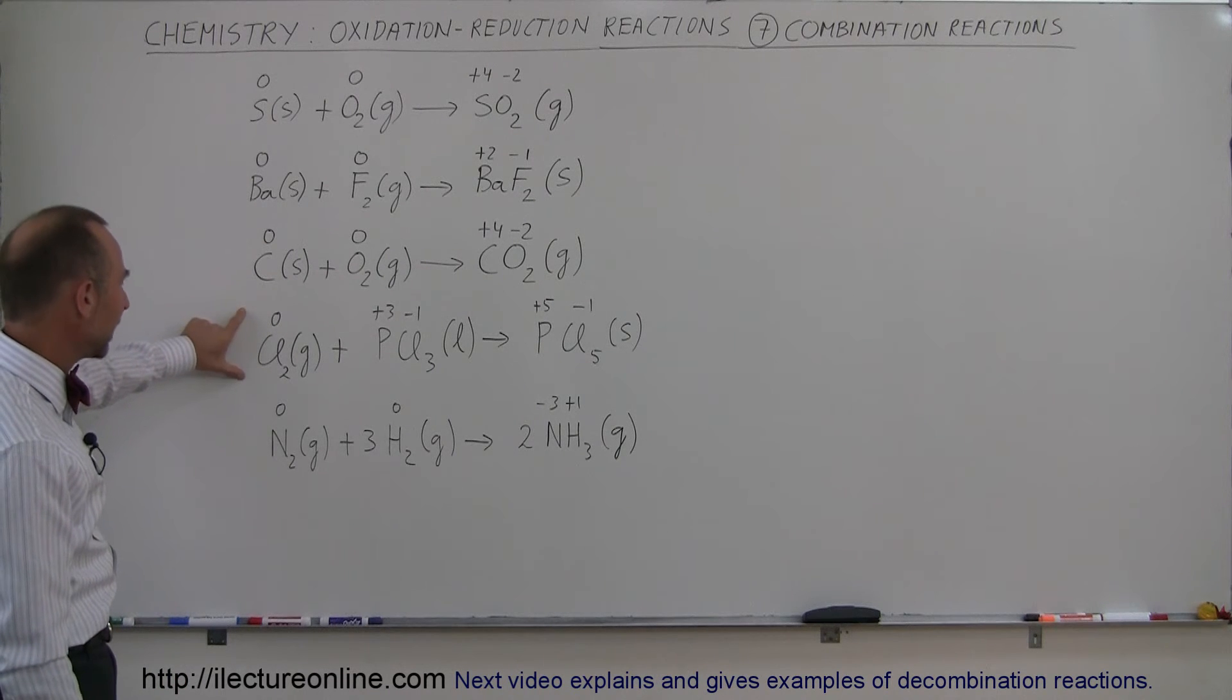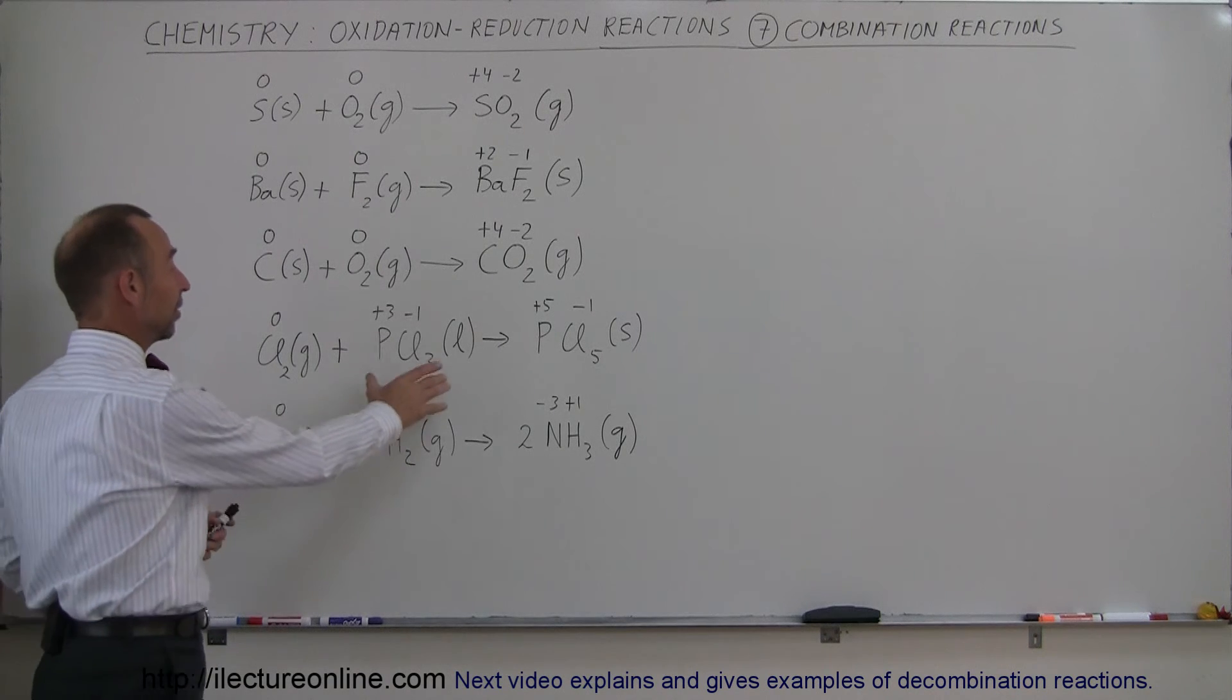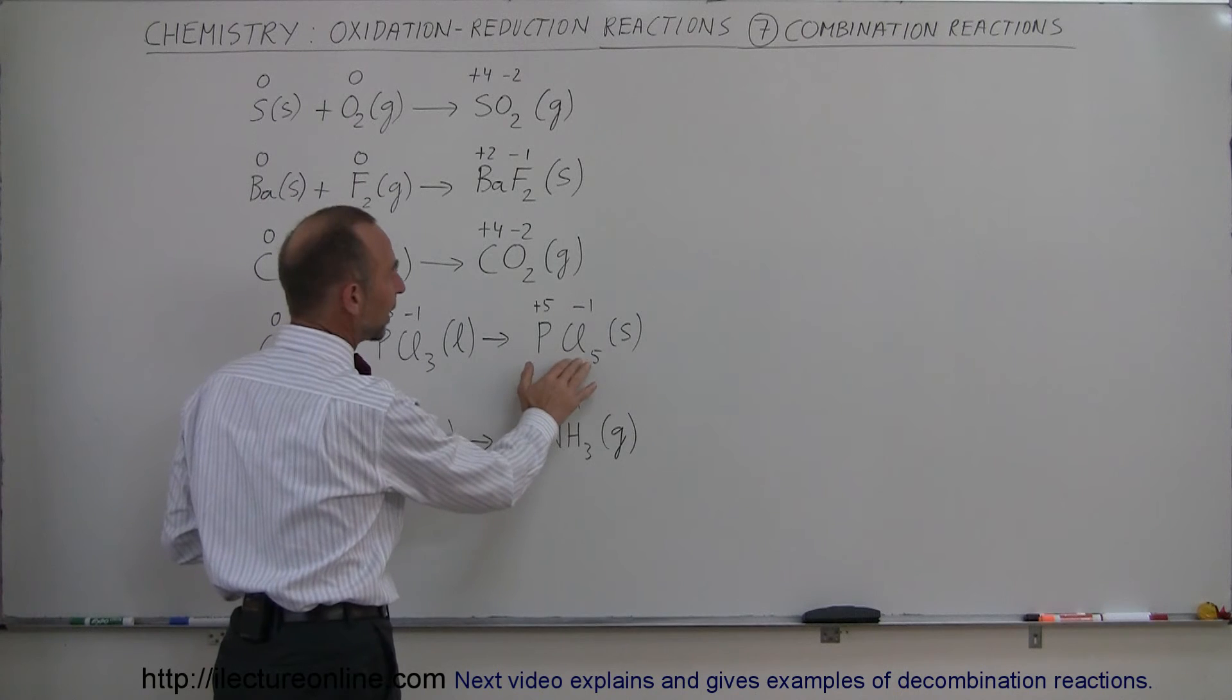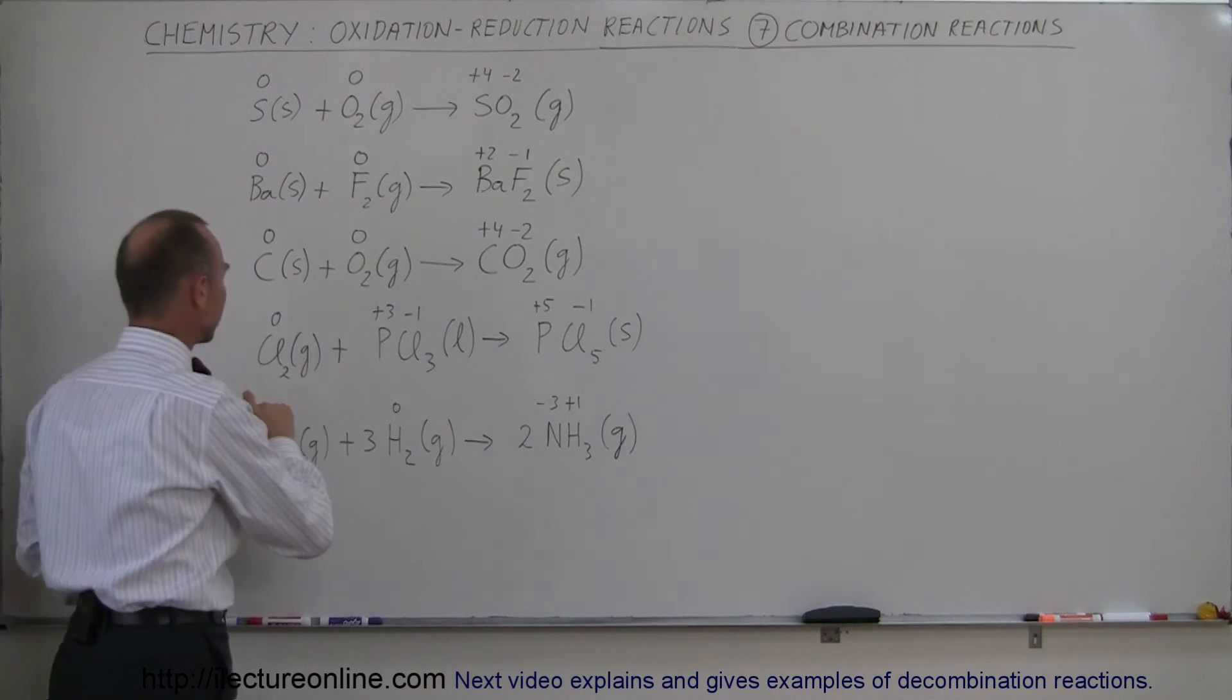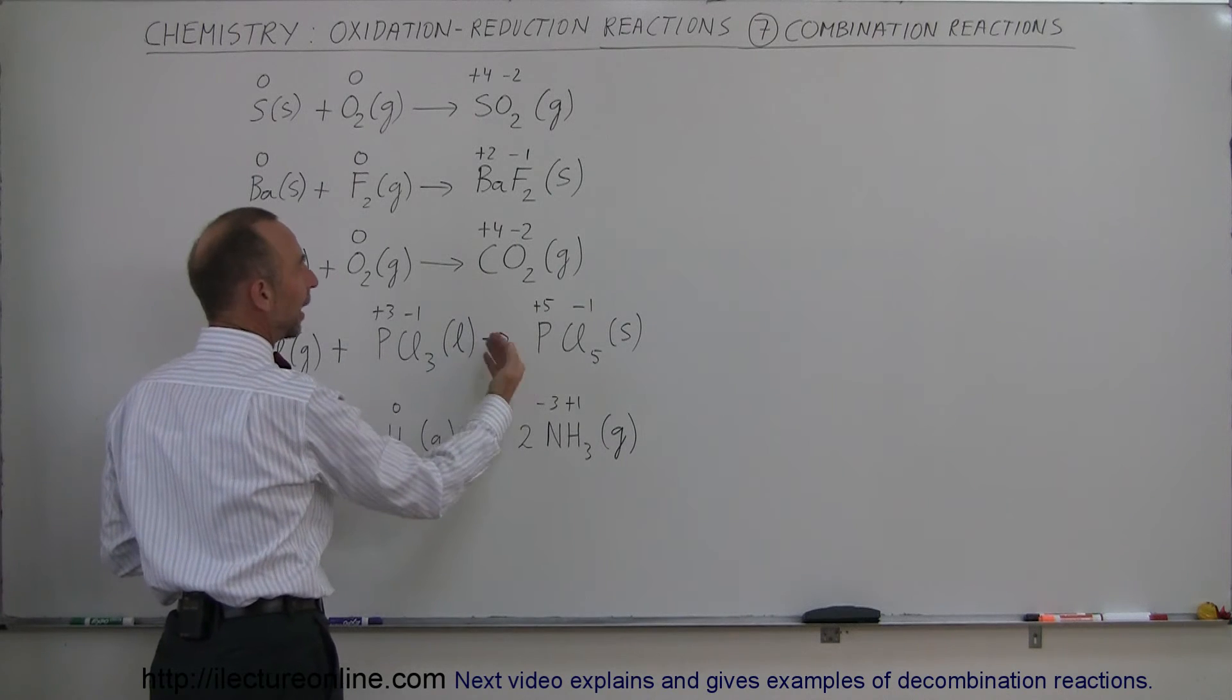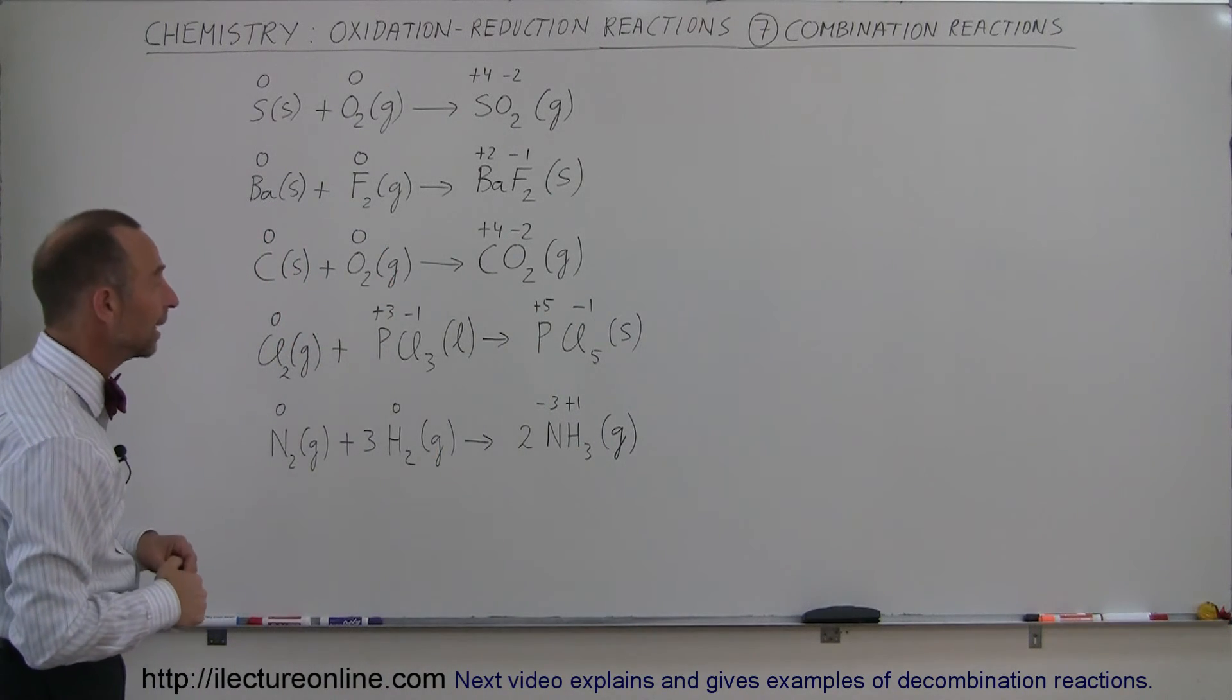So we have chlorine gas and we have phosphorus trichloride come together. This is a liquid. There's a gas they combine. Forms a solid phosphorus pentachloride. Notice that the oxidation state from phosphorus went from plus 3 to plus 5. And it therefore had an ability to get two more chlorines in its molecule.